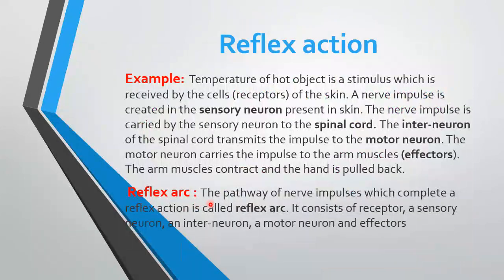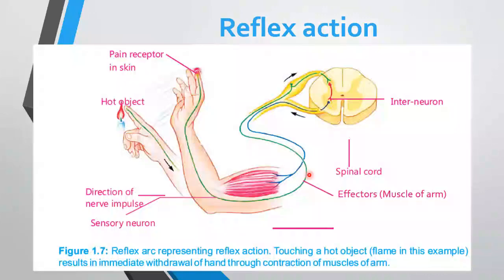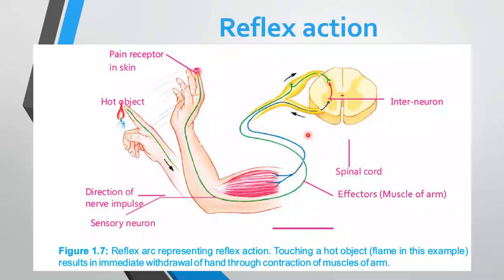Reflex arc: the pathway of nerve impulses which completes our reflex action is called reflex arc. It consists of receptor, a sensory neuron, an interneuron, a motor neuron, and effectors. یہ pathway جو reflex action کو complete کرتی ہے — sensory neuron سے interneuron، interneuron سے motor neuron، اور motor neuron سے effectors تک — اسے reflex arc کہتے ہیں۔